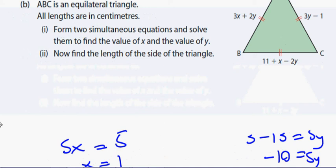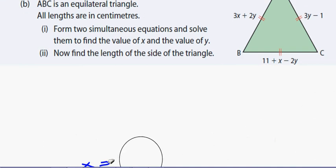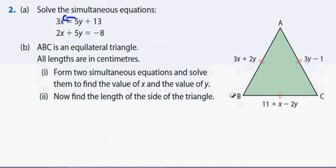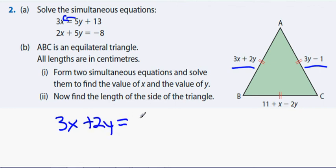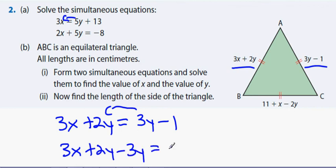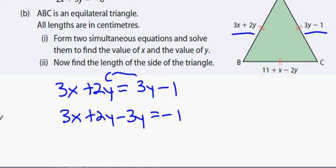Next question: ABC is an equilateral triangle, all lengths in centimetres. Form two simultaneous equations and solve them. Since all three sides are equal, I can set this side equal to that side: 3x plus 2y equals 3y minus 1. Bringing 3y over: 3x minus y equals minus 1. That's my first equation from the two blue sides.